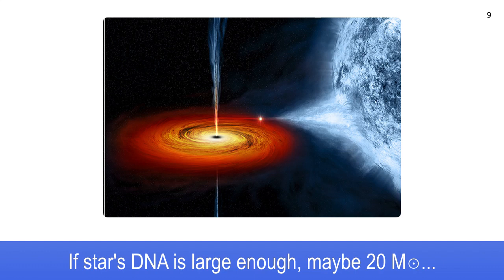So those are the three kinds of black holes: astrophysical — the picture here — galactic black holes like Sagittarius A*, and primordial black holes, which are a speculative bubbling of the early universe, the first few seconds of the Big Bang.